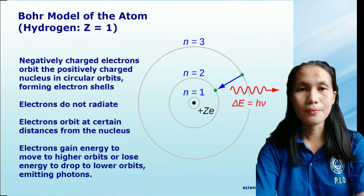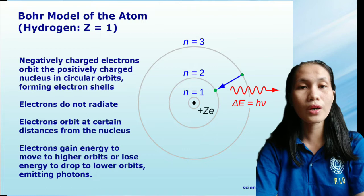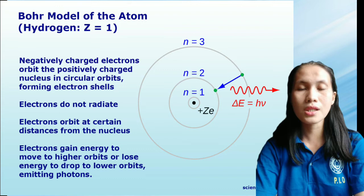The radius of the possible orbits increases as n squared, where n is the principal quantum number. The 3 to 2 transition produces the first line in the Balmer series. For hydrogen, this produces a photon having a wavelength of 656 nanometers.